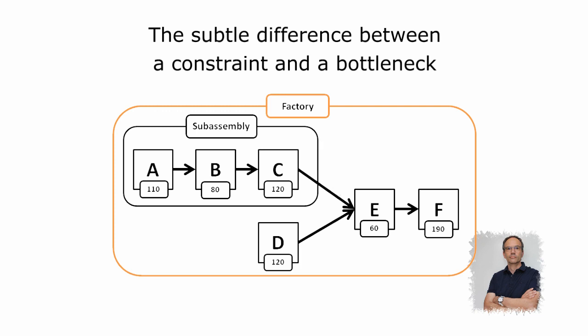The plant, as a system, will have no benefit from this so-called improvement, as no additional unit can be shipped out and sold. Therefore, all attention must be focused on the constraint, because any improvement of E's throughput will automatically improve the whole plant's throughput.